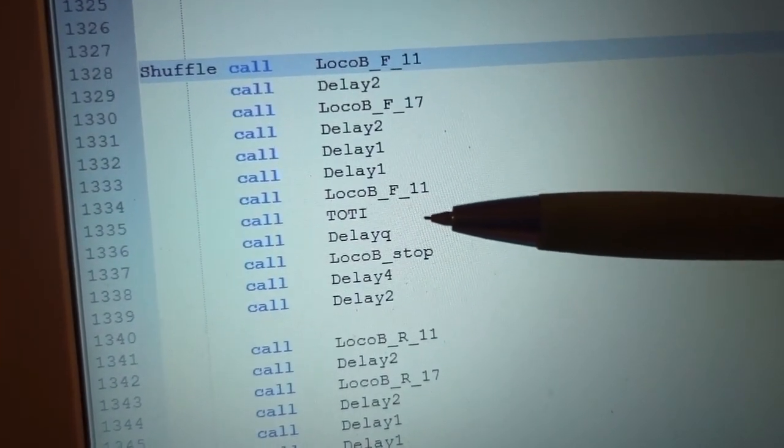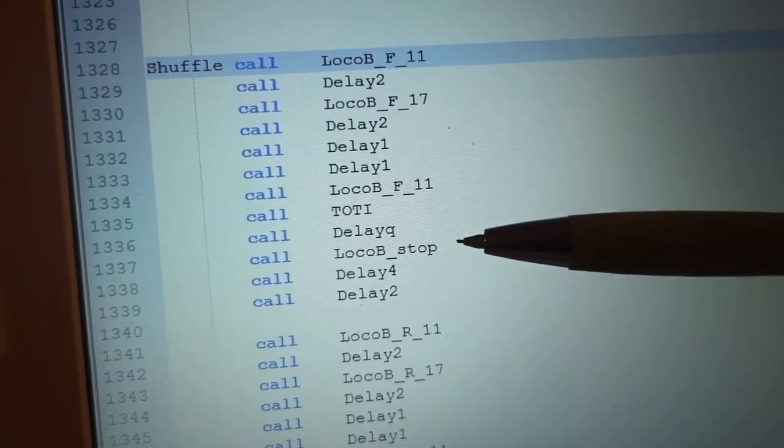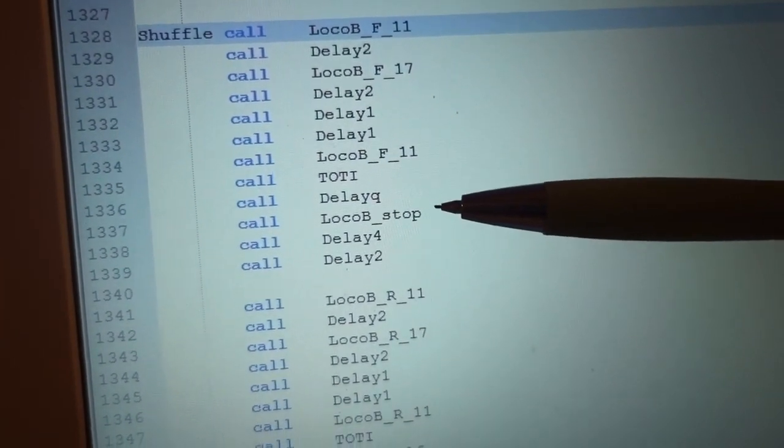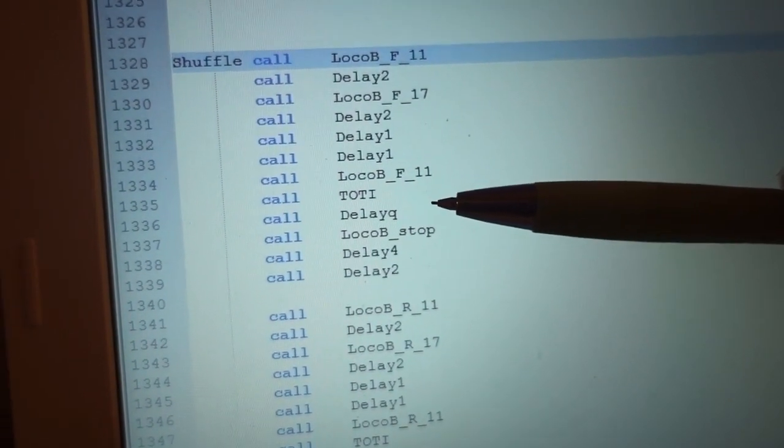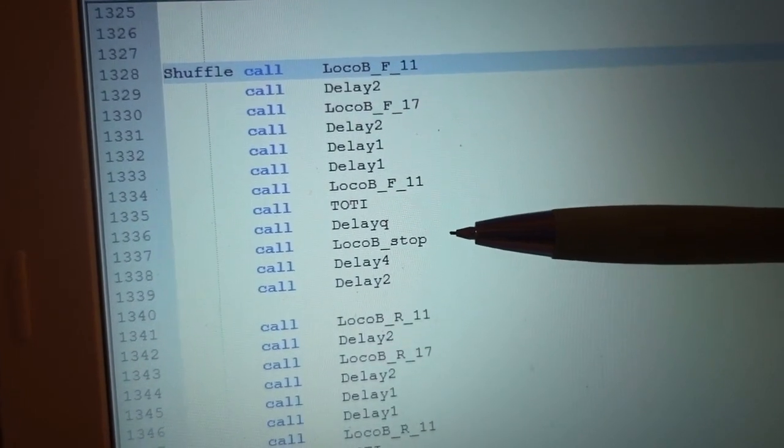and wait for the TOTI to trip when the loco slows down to a stop at the buffers. I've put in an extra quarter second delay here so that it stops accurately at the buffers.